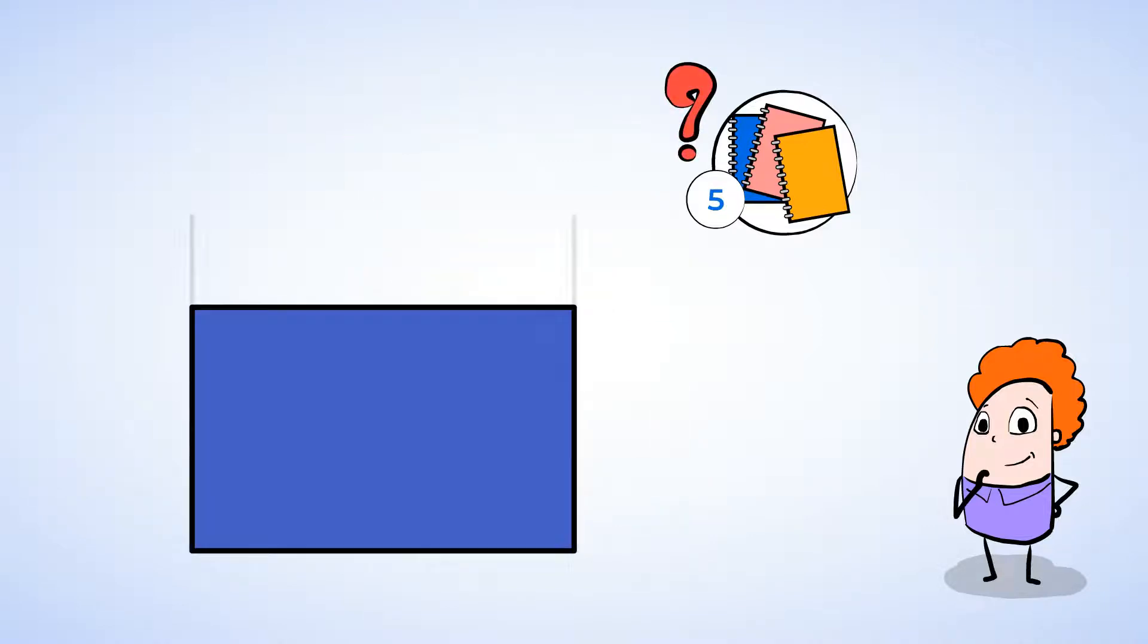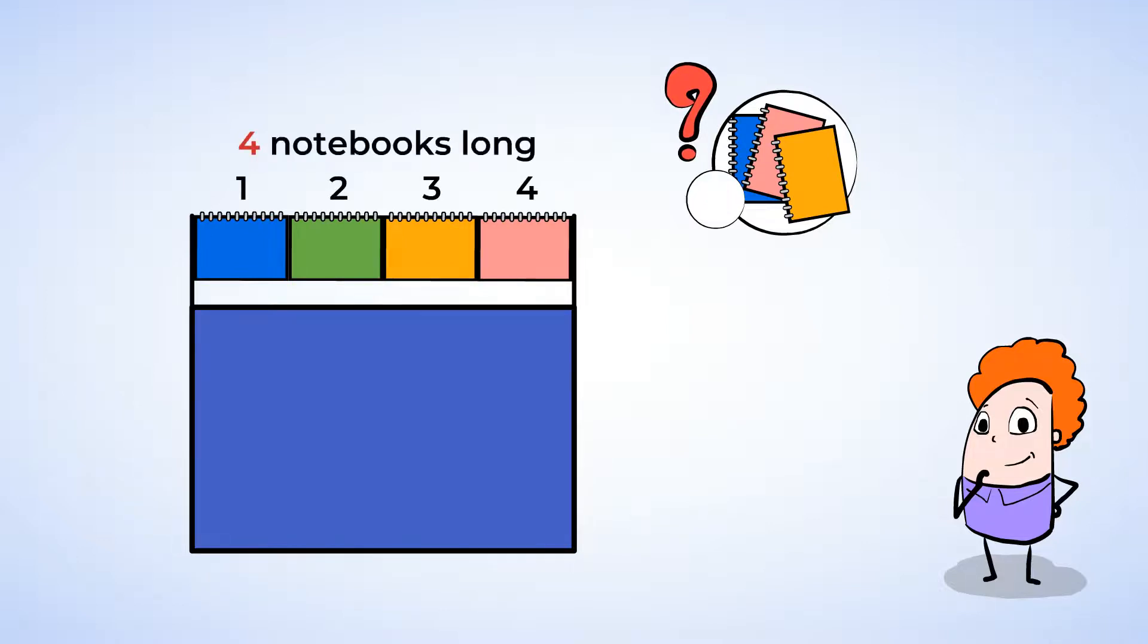Okay, Eric is starting to measure, and he puts the first notebook right along the edge of the desk. Good. And the next notebook is touching the first one. And look, he keeps laying them down one by one until he gets to the other edge of the desk. And how long is it? One, two, three, four. The desk is four notebooks long. Was that close to your guess? Yes, it was close to mine.